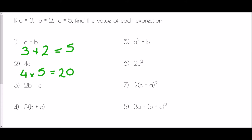In question 3, we have 2b take away c. We've got to remember BIDMAS here — 2b must happen first because multiplication comes before subtraction. So that is 2 times whatever b is; b is 2, take away c which is 5. So we have 2 times 2, which is 4, take away 5 — that is actually negative 1.